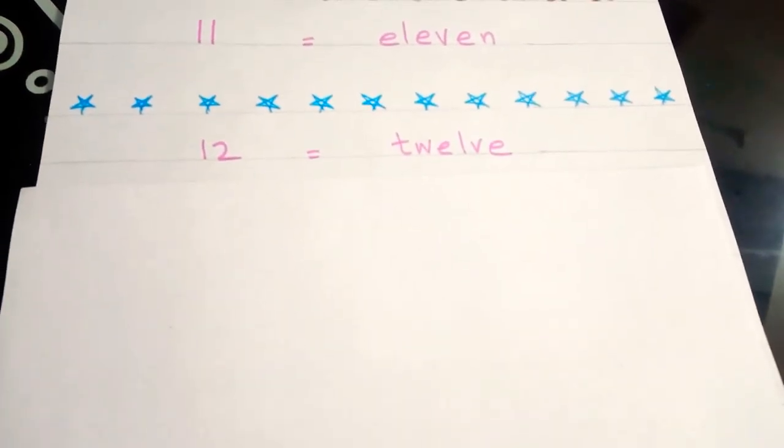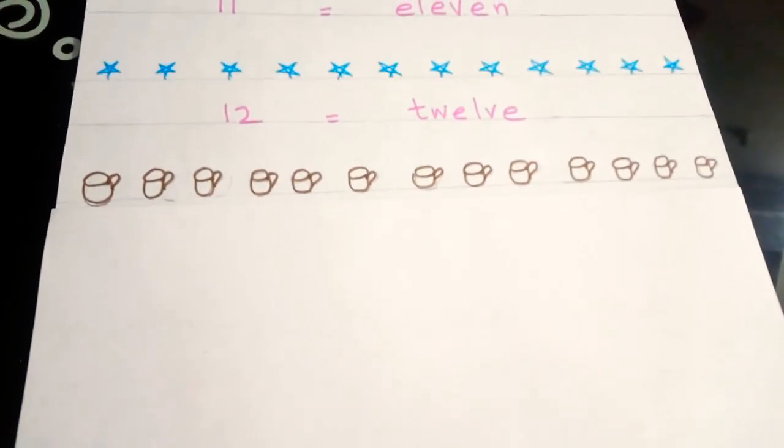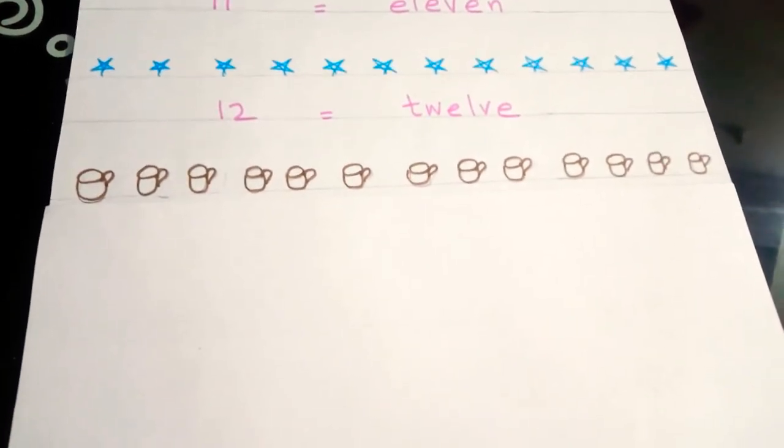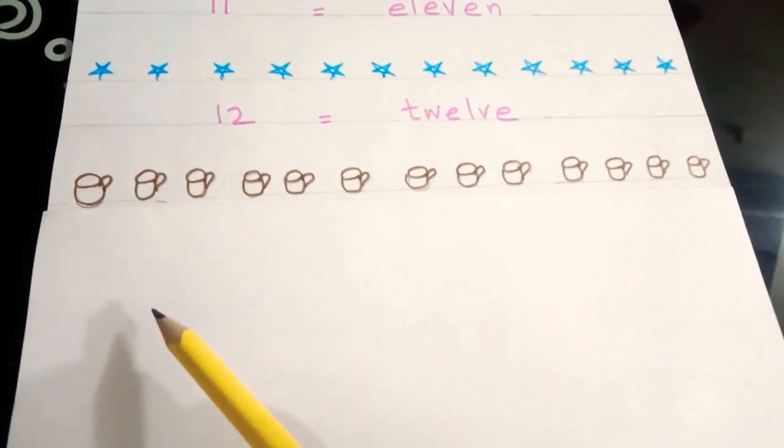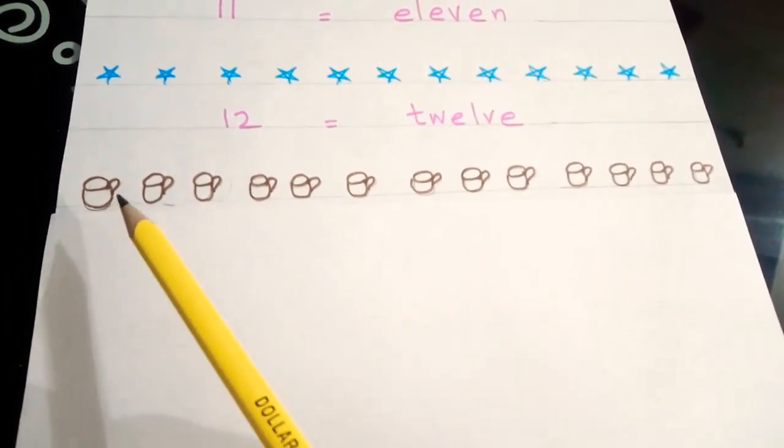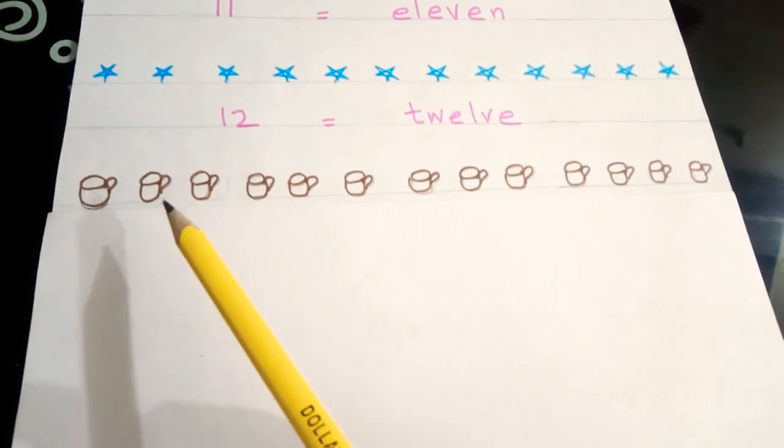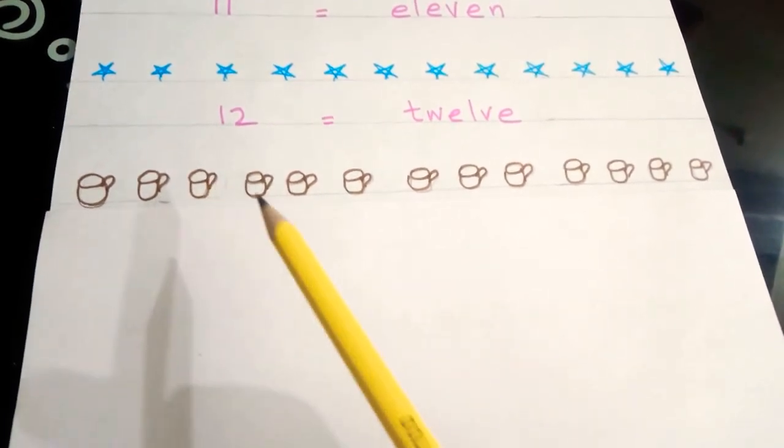Now, let's see what we have. Okay, so these are mugs. We drink milk and tea in the mugs. So, count how many are these?